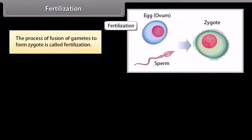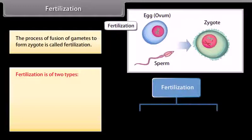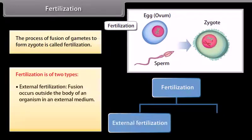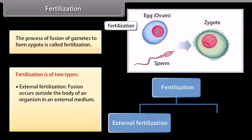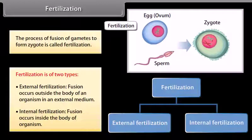The process of fusion of gametes to form a zygote is called fertilization. Fertilization is of two types: external fertilization, where fusion occurs outside the body of an organism in an external medium, and internal fertilization, where fusion occurs inside the body of the organism.